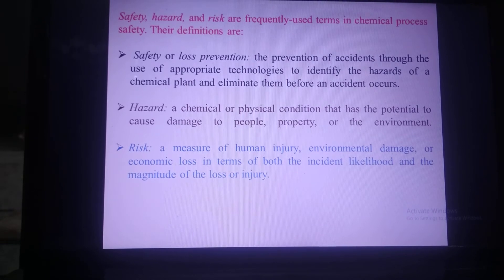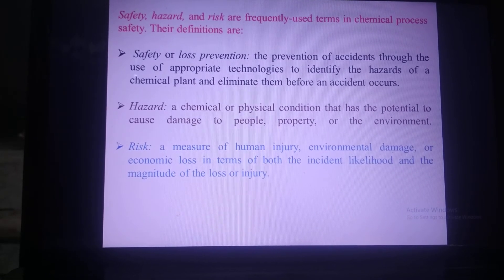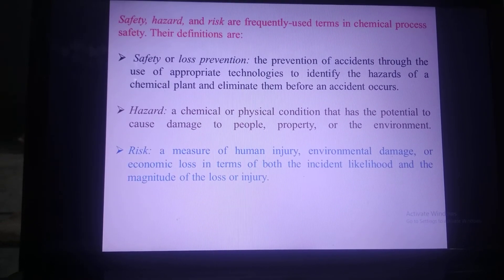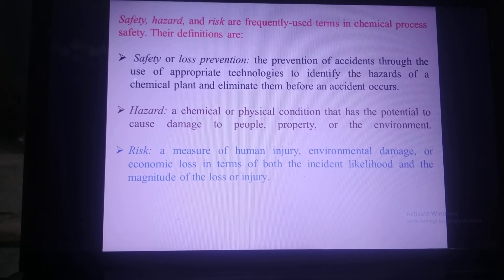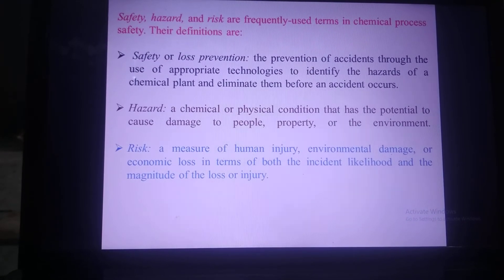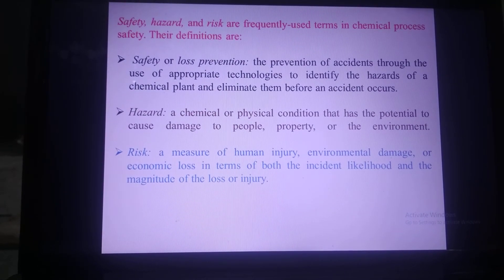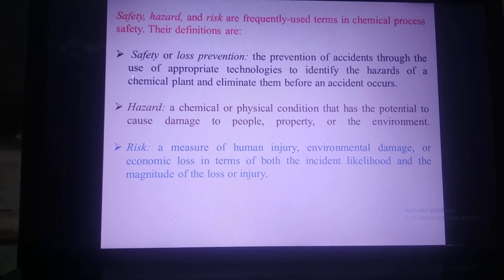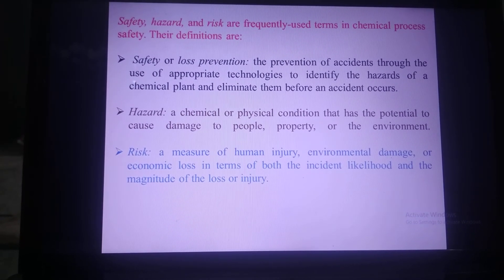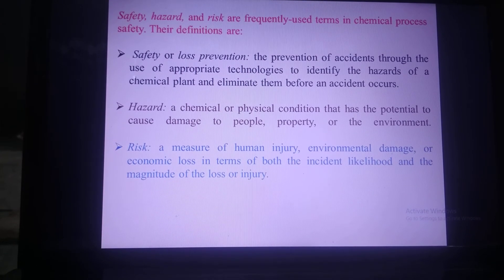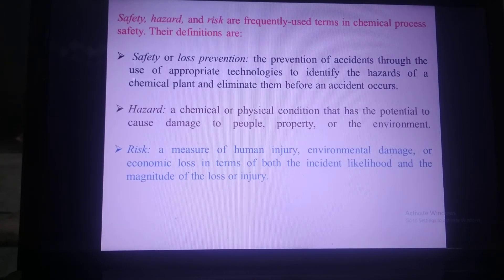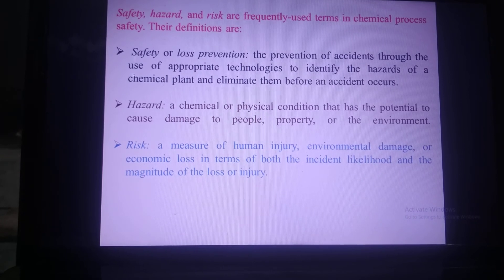Additionally, chemical plants contain a large variety of hazards. The first type is mechanical hazards, which cause worker injuries from tripping, falling, or moving equipment. The second type is chemical hazards, which include fire and explosion hazards, reactivity hazards, and toxic hazards. These are the two main types of hazards in chemical plants.